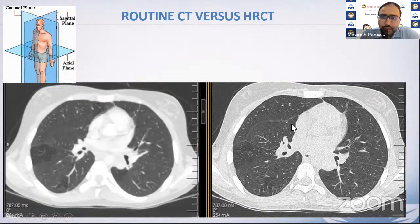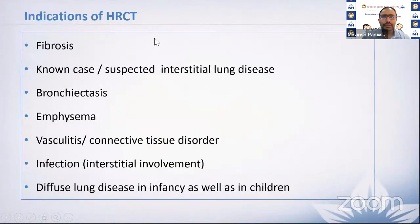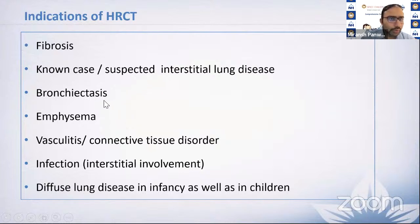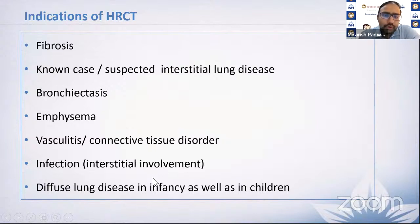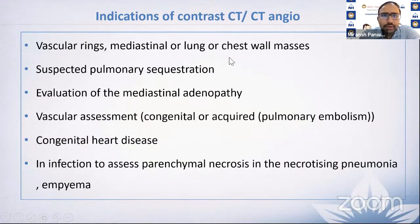Indications for HRCT: when suspecting fibrosis or interstitial lung disease, to assess bronchiectasis and its etiology, to evaluate emphysema, connective tissue disorders, or pulmonary manifestations of vasculitis, and for infections like viral or fungal with interstitial involvement. HRCT is also indicated for diffuse lung disease of infancy and childhood, which is a broad category with multiple entities.